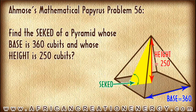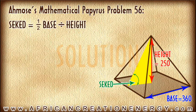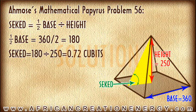Let's tackle problem 56 from Ahmose's mathematical papyrus. Problem 56 says: find the Seqed of a pyramid whose base is 360 cubits and whose height is 250 cubits. To solve this problem, remember that the Seqed is equal to half of the base divided by the height. Half of our base would be 360 divided by 2, which is 180. Our Seqed, therefore, would be 180 divided by 250, which comes out to 0.72 cubits.